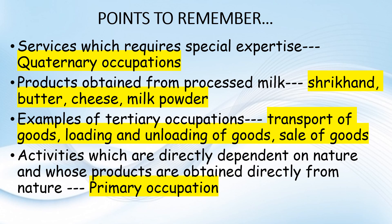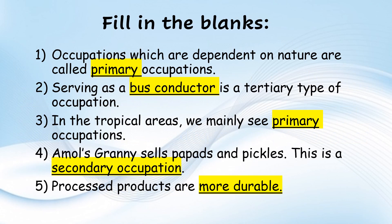Activities which are directly dependent on nature and whose products are obtained directly from nature are primary occupations. Fill in the blanks: Occupations which are dependent on nature — primary occupation. Serving as a bus conductor is a tertiary type of occupation. In tropical areas we mainly see primary occupations.